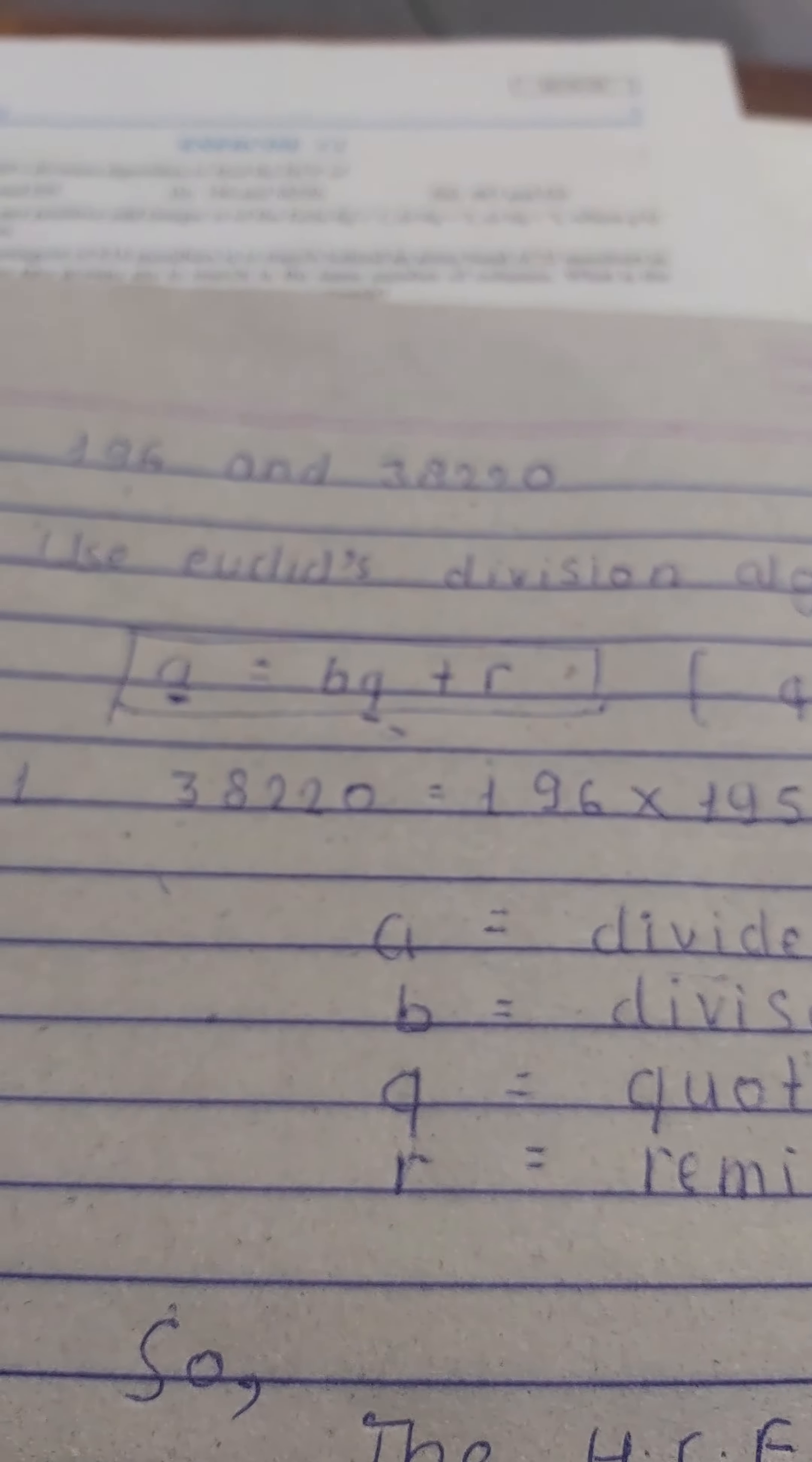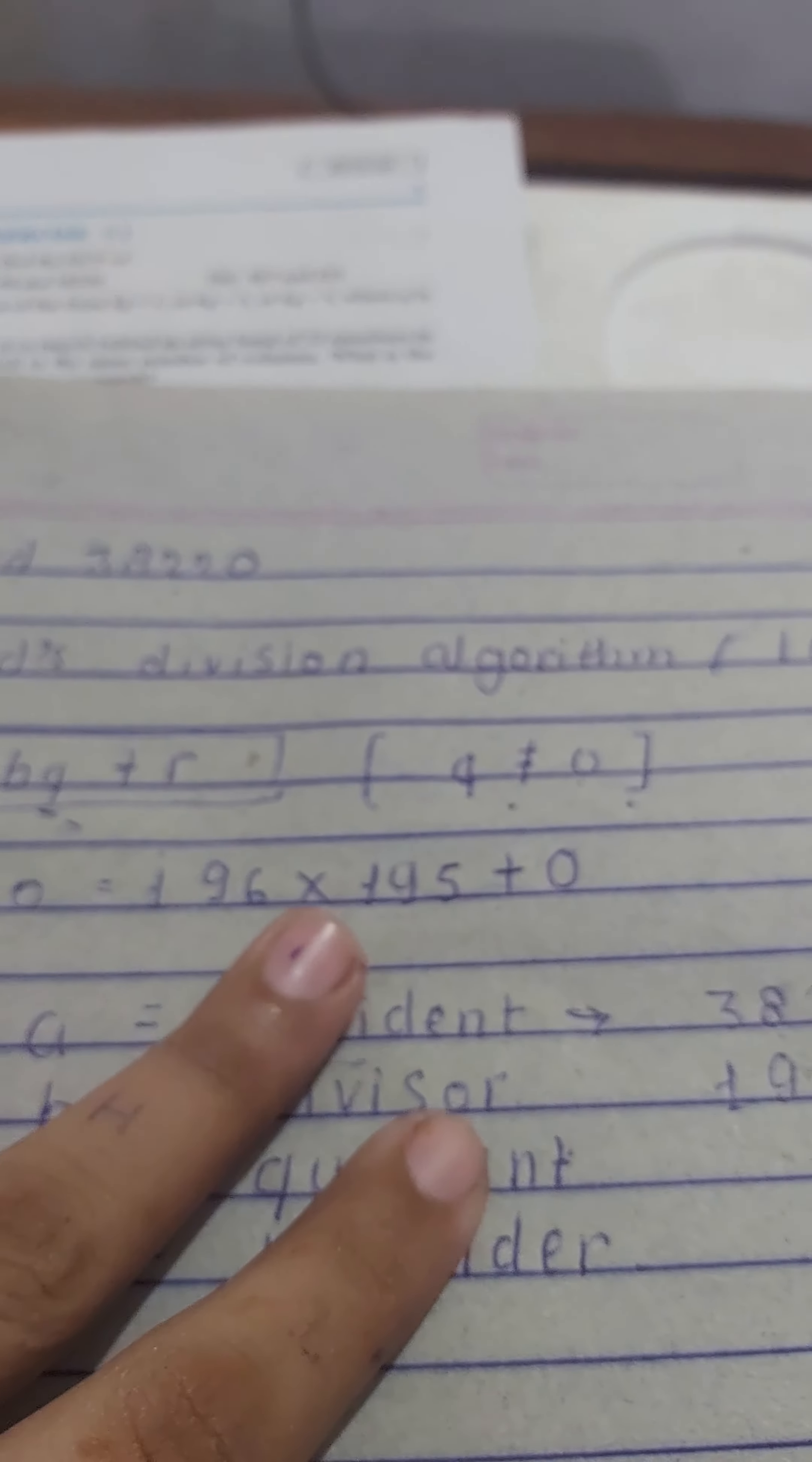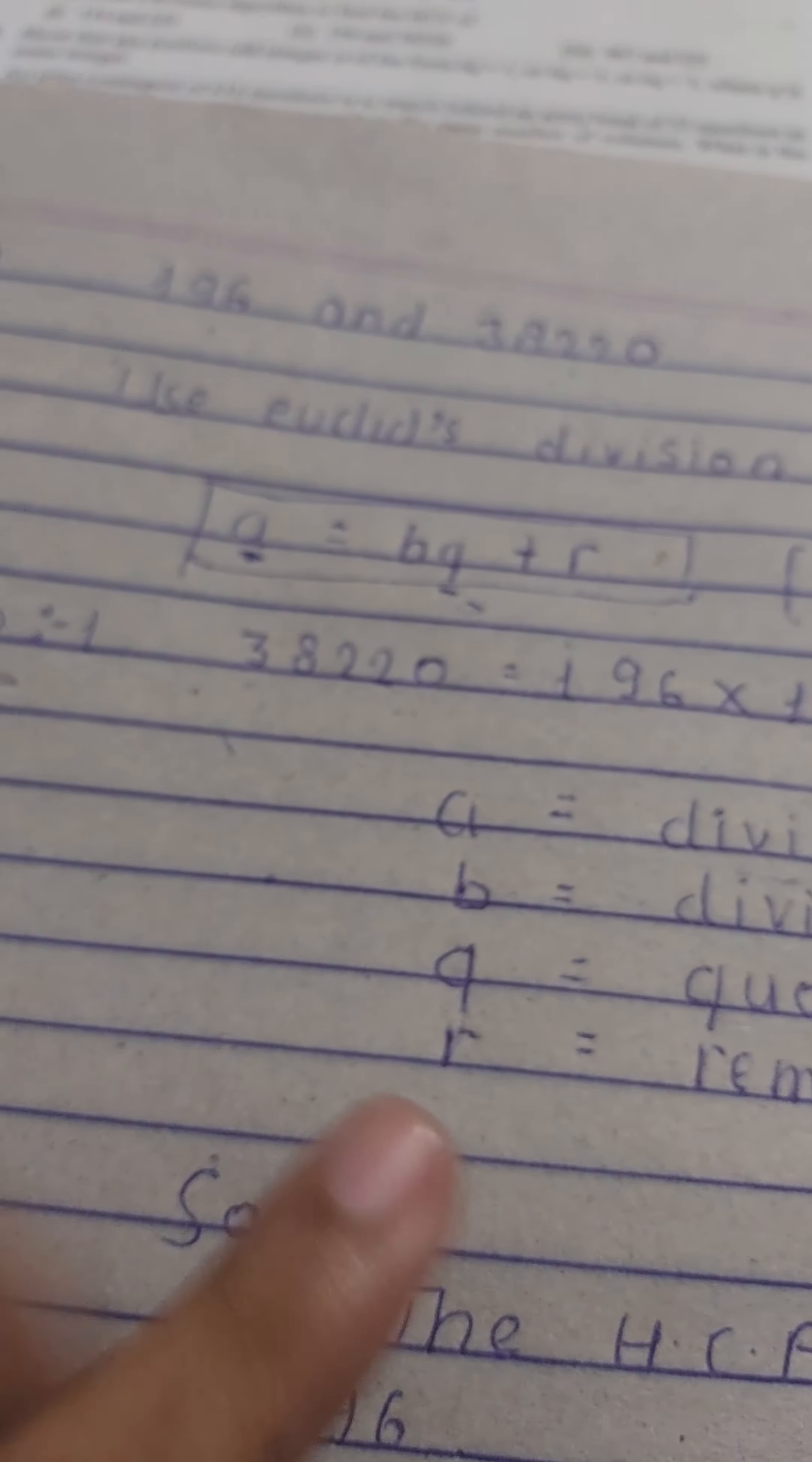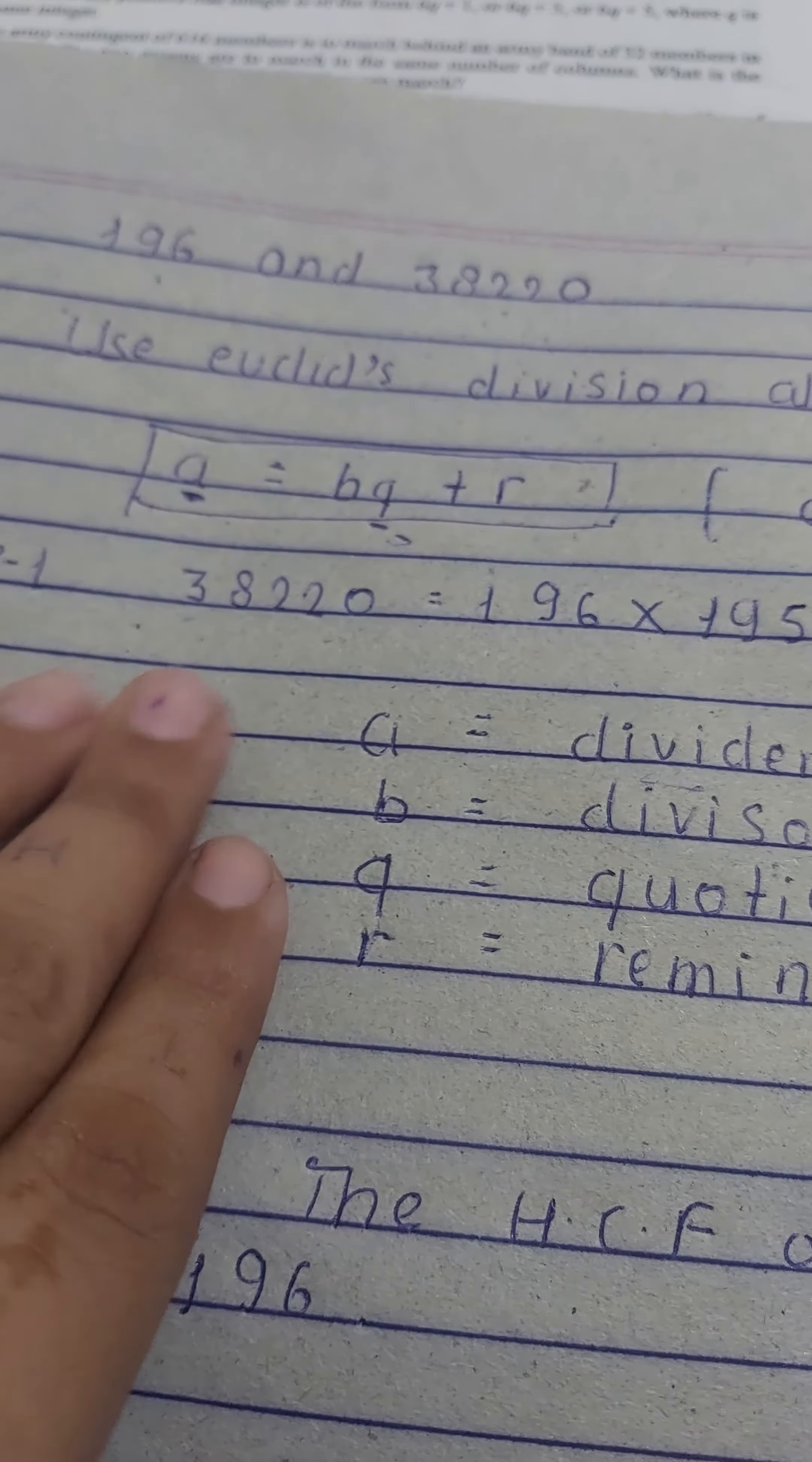Now put these values in here. We put 38220 because this value is larger than 196, and here we put 196. When we divide 38220 by 196, the quotient is 195 and the remainder is zero.